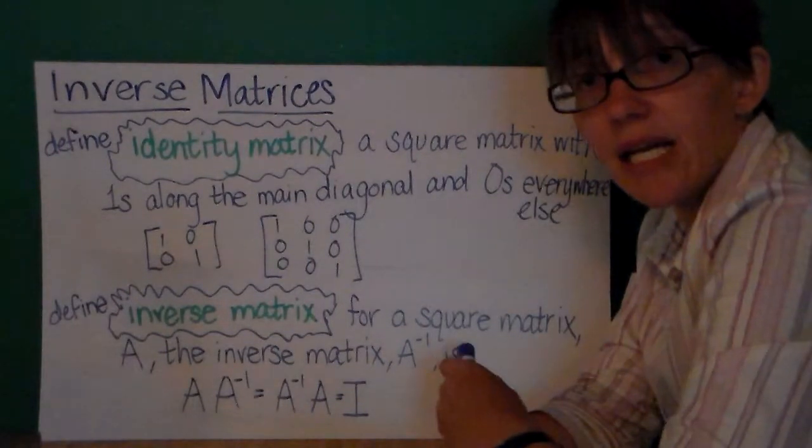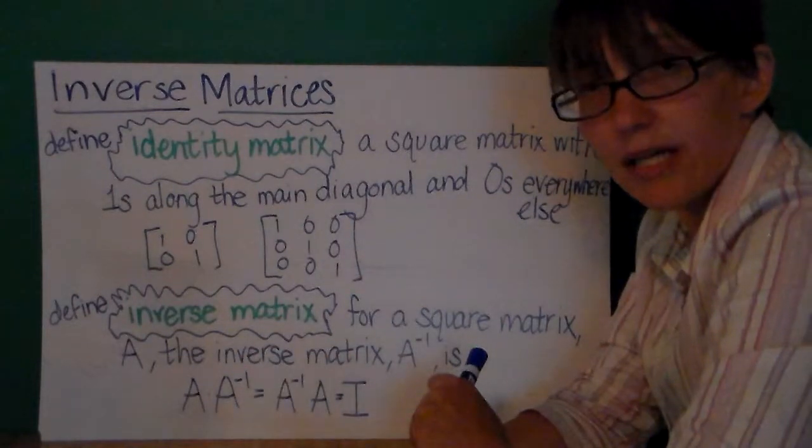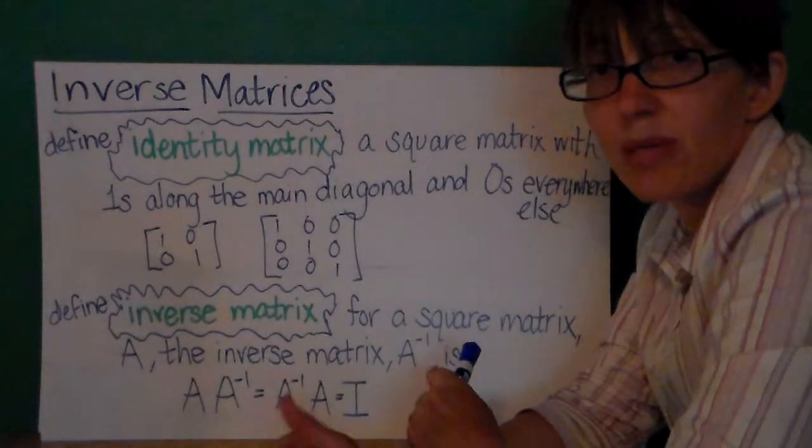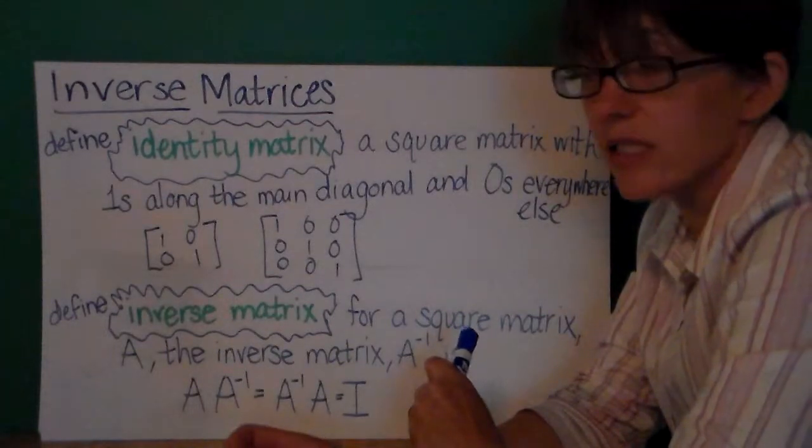We can have an n by n identity matrix of any size you desire. The 1 by 1 identity matrix by the way just has the number 1 in it.